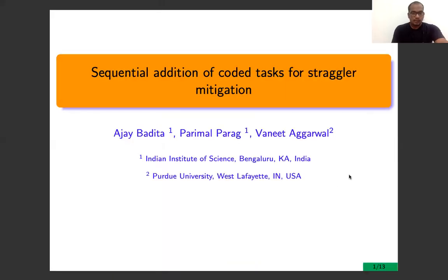Hi, my name is Azir. I am a graduate student at Indian Institute of Science, Bangalore, India. Today I will talk about the most common problem in large-scale distributed systems. When we are doing the parallel computation job, completion time is limited by the slowest server, which is called the straggler.